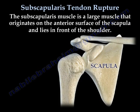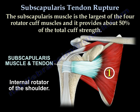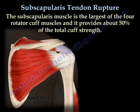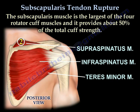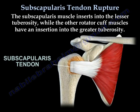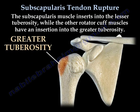Subscapularis tendon rupture. The subscapularis muscle is a large muscle that originates on the anterior surface of the scapula and lies in front of the shoulder. It is the largest of the four rotator cuff muscles and provides about 50% of the total cuff strength. The subscapularis muscle inserts into the lesser tuberosity, while the other rotator cuff muscles have an insertion into the greater tuberosity.